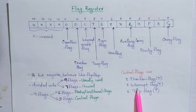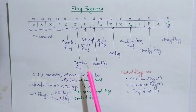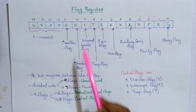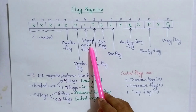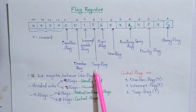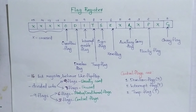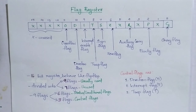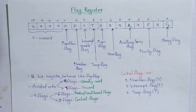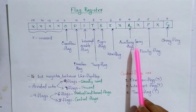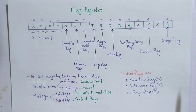The three control flags are: direction flag (D), interrupt enable flag (I), and trap flag (T). The other six flags are the status or conditional flags, which show the condition or status after an ALU operation. These are: overflow flag, sign flag, zero flag, auxiliary carry flag, parity flag, and carry flag.